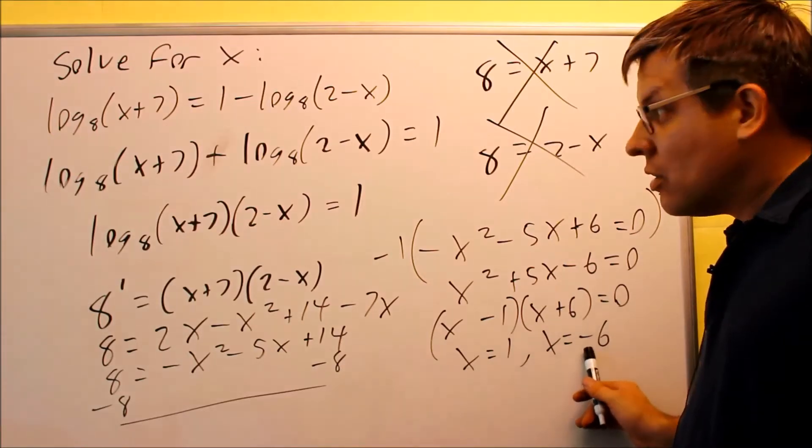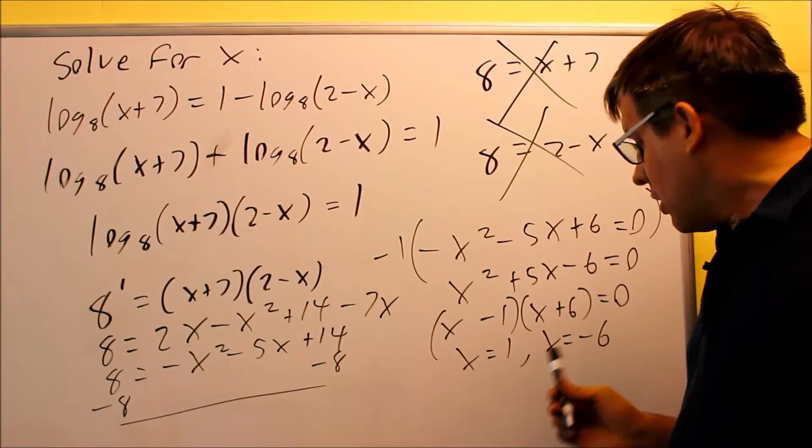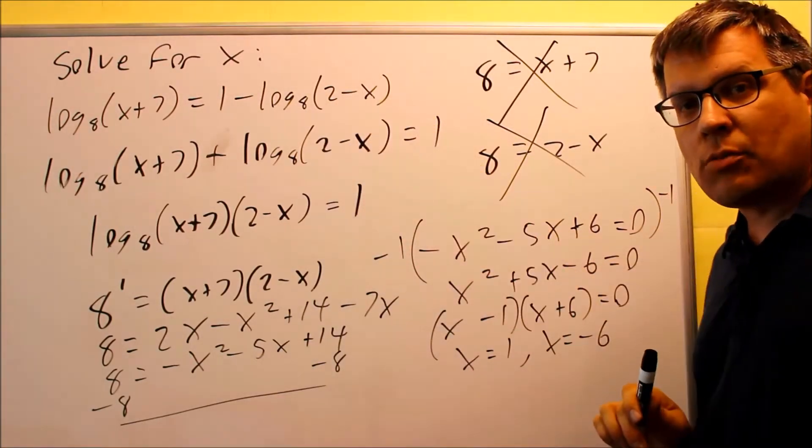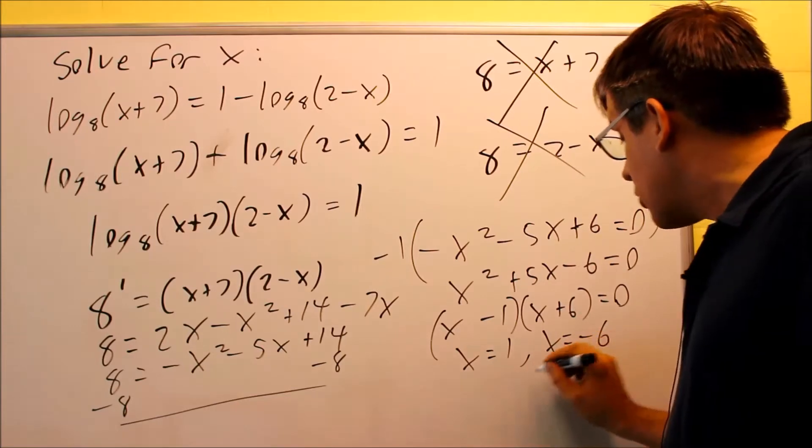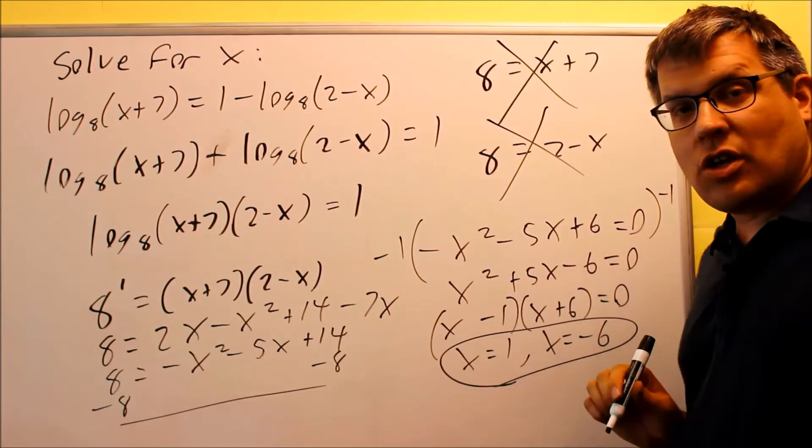Let's try negative 6. Negative 6 plus 7 is a positive 1. Negative 6, you have 2 minus a negative 6. That also gives you a positive number, so therefore there's no domain restrictions. Both of these answers would be correct. You get 1 and you get negative 6.